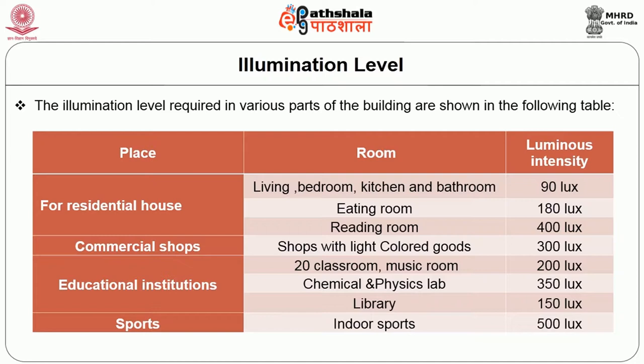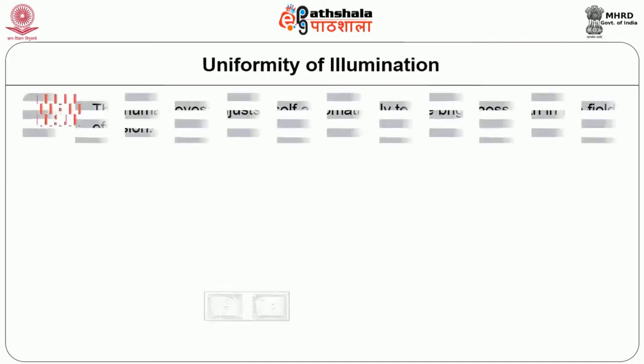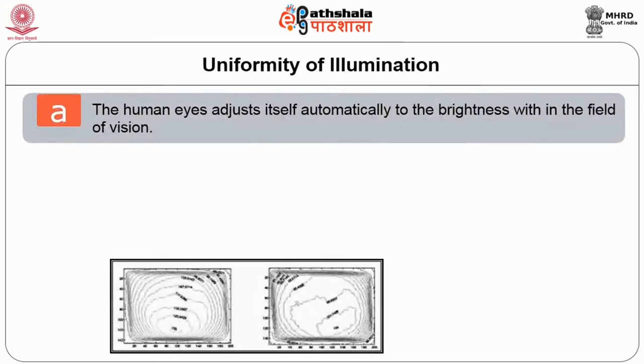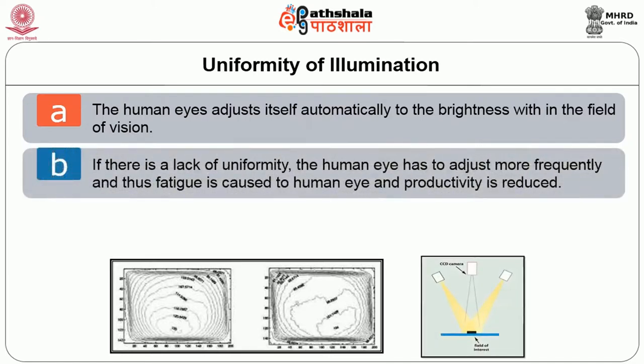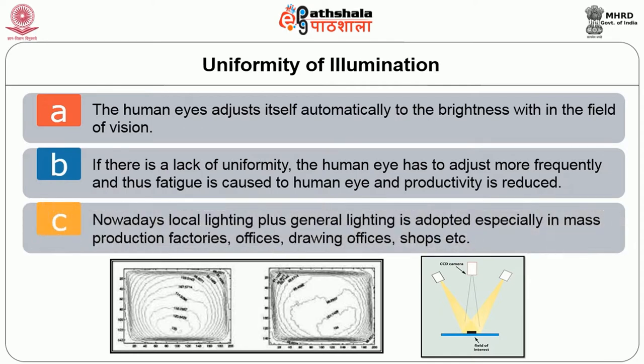Uniformity of illumination: the human eye adjusts itself automatically to the brightness within the field of vision. If there is a lack of uniformity, the human eye has to adjust more frequently and fatigue is caused, resulting in reduced productivity. Nowadays, local lighting plus general lighting is adopted, especially in mass production factories, offices, drawing offices, shops, etc.